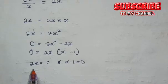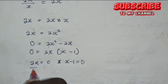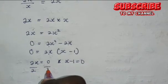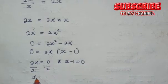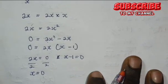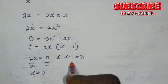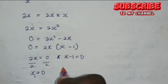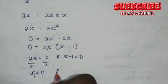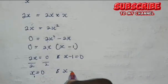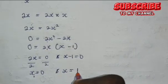From the first equation, dividing both sides by 2, we have x equals 0. And from the second equation, collecting like terms, we have x equals 1.